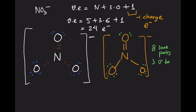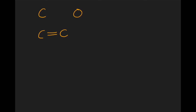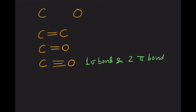NO₃⁻ has three sigma bonds and one pi bond. The sigma bond is the single bond component, and the extra bond in the double bond is the pi bond. Pi bonds are present whenever atoms form double bonds. For triple bonds, there is one sigma bond and two pi bonds — all bonds beyond the first are counted as pi bonds, while a double bond gives one sigma and one pi bond.